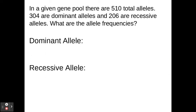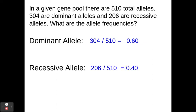Now the questions we're about to do are on your worksheet, so you can fill these in as we move through them. In a given gene pool, there are 510 total alleles: 304 are dominant and 206 are recessive. What are the allele frequencies? For the dominant allele, 304 divided by 510 equals 0.6 — so 60% of the alleles are dominant. For the recessive allele, 206 divided by 510 equals 0.4 — so 40% of the alleles are recessive.